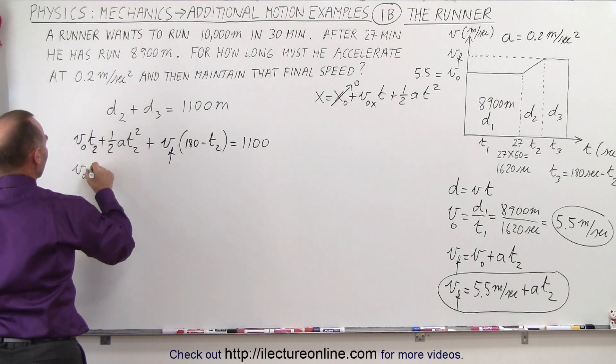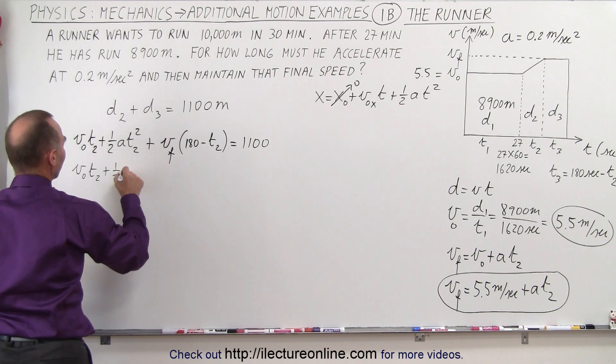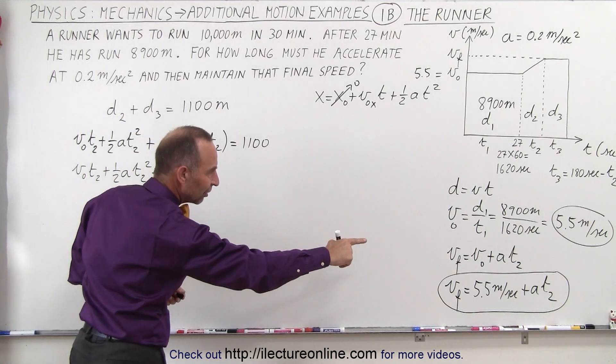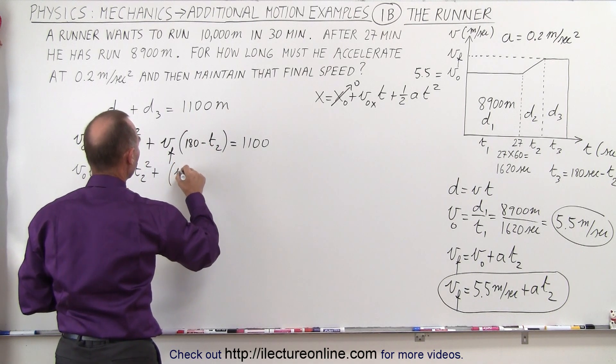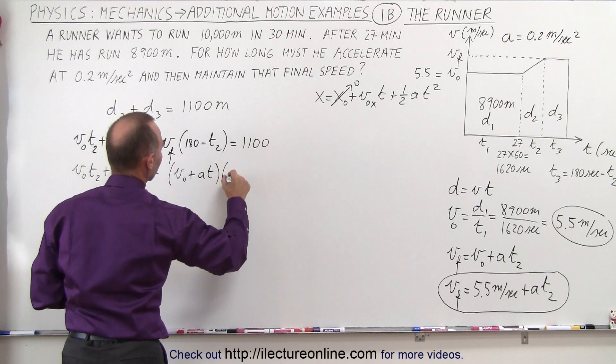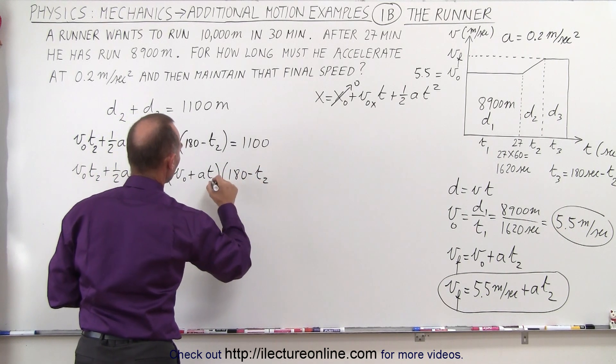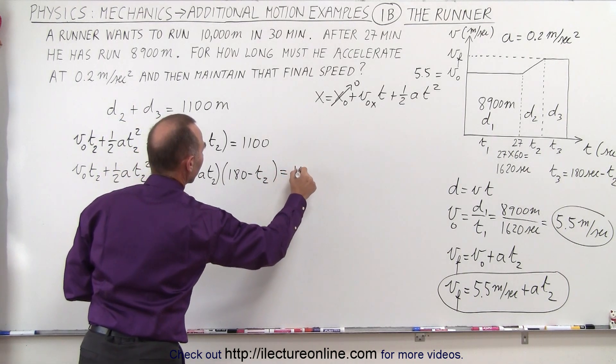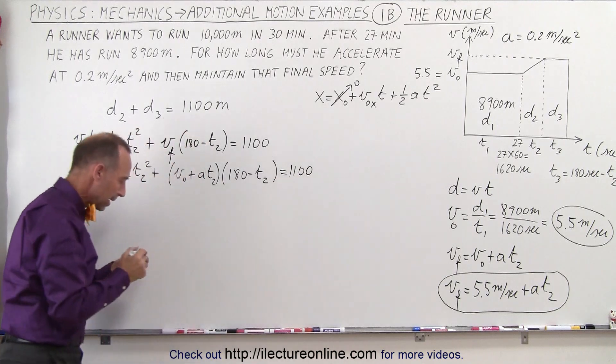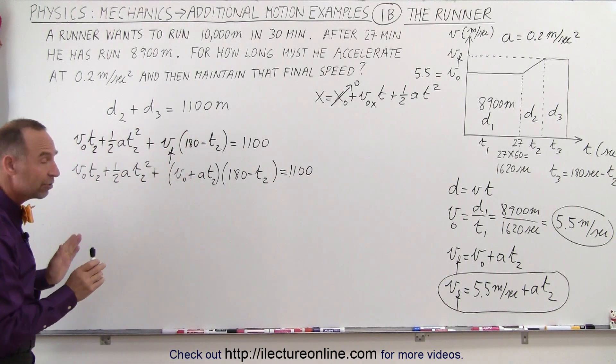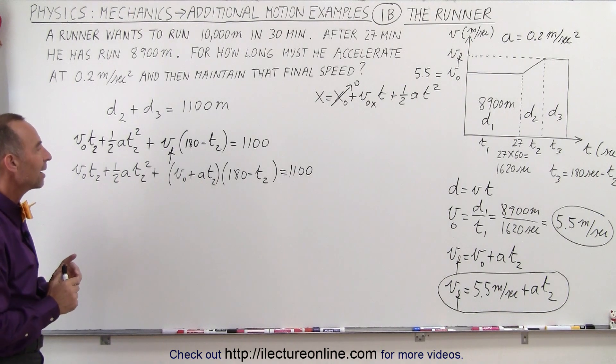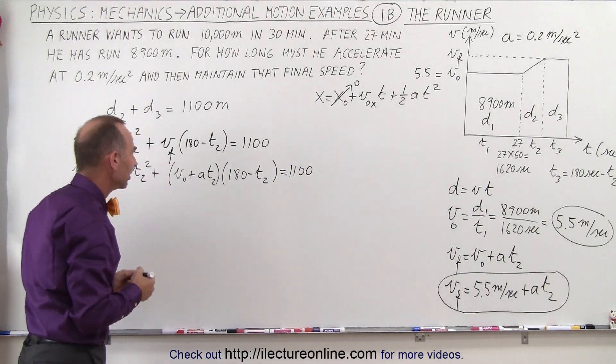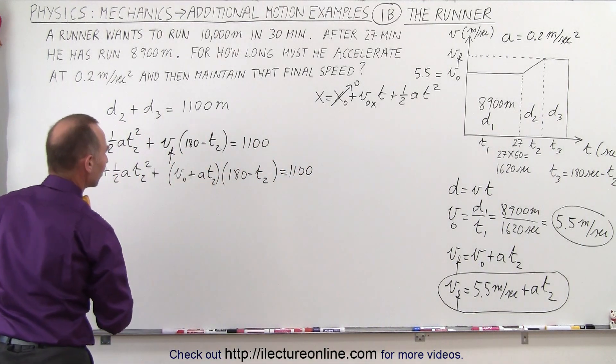So we have v initial times t2 plus 1 half at2 squared plus, instead of writing v final, we're going to write v initial plus a t, v initial plus a times t multiplied times 180 minus t2. And of course, this will be t2. That equals 1100. There we go. And now what we have here is an equation that only has one unknown t, time. And of course, t2, that would be the time for this time period right there. Once we know that, everything else can be easily calculated. So let's now plug in all the numbers here and see what we get.